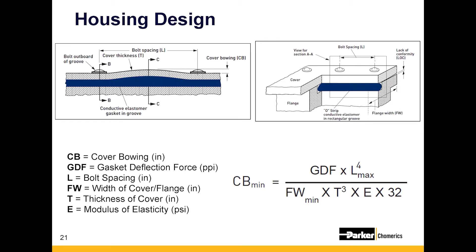An important consideration in housing design is understanding how much force is needed to compress these gaskets. Cover thickness and bolt spacing are two pretty important factors when considering the type of elastomer, its hardness, and even the overall size of the housing. For example, I had a customer who designed a six-inch by six-inch box with only one screw in each corner, and there was a lot of leakage. Bolt spacing is to the fourth power over cover thickness to the third — they were trying to use bent sheet metal.